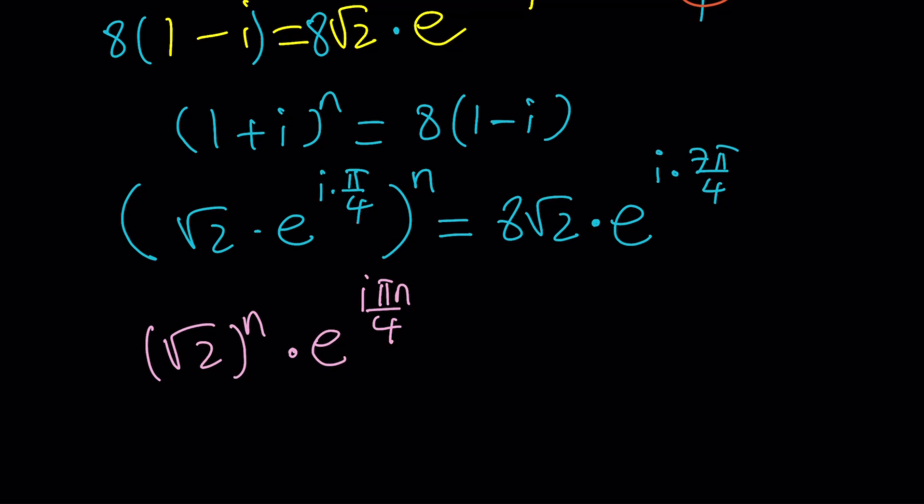You can't all the time do it because sometimes it's going to cause issues. Here we have 8√2, and the same thing. Nothing changes on the right-hand side yet.